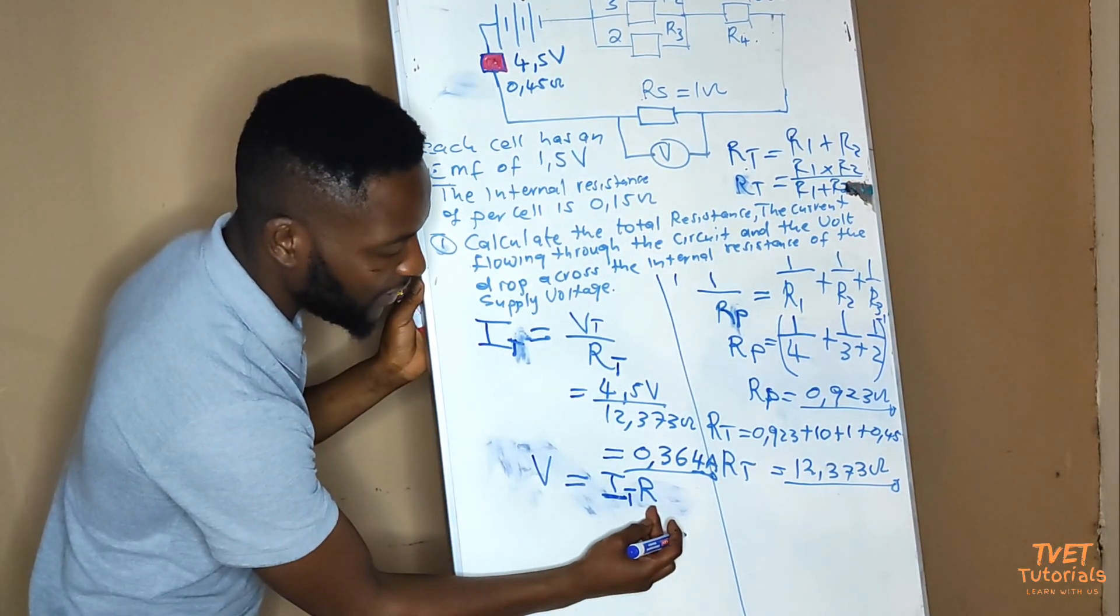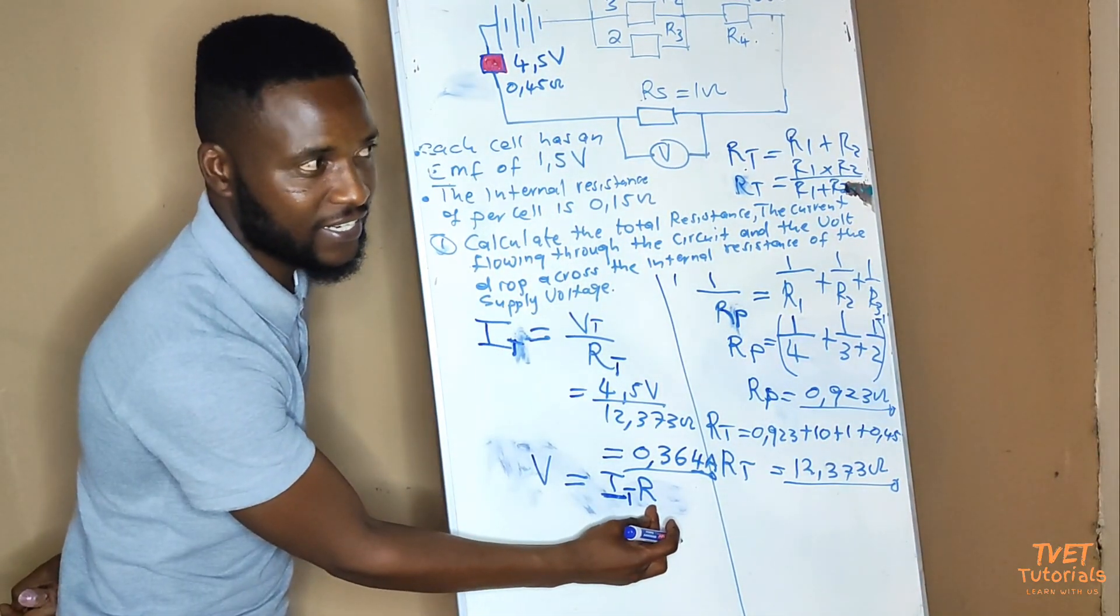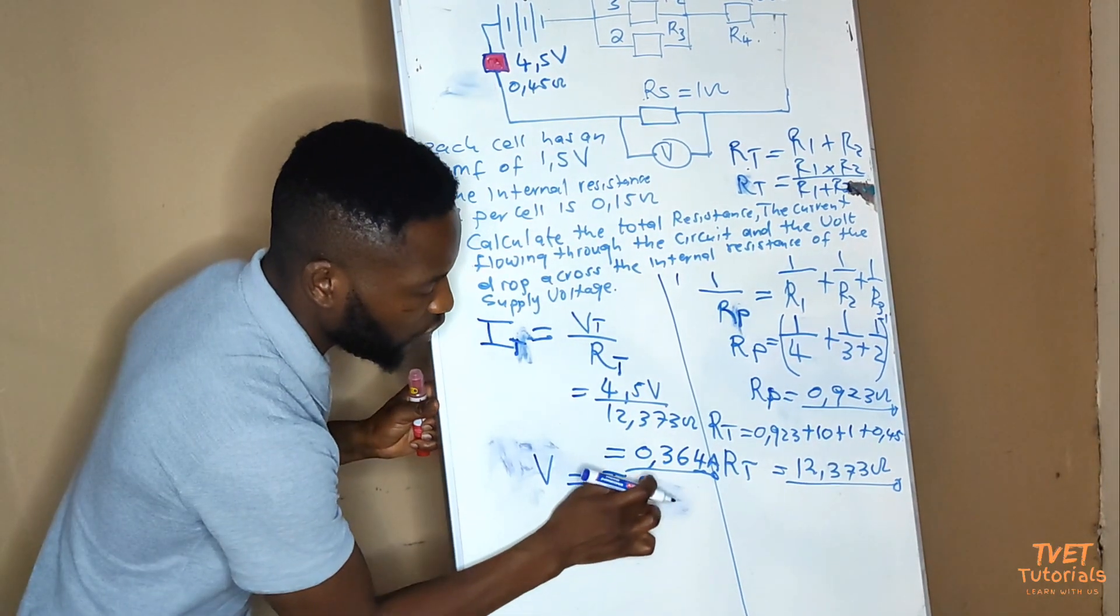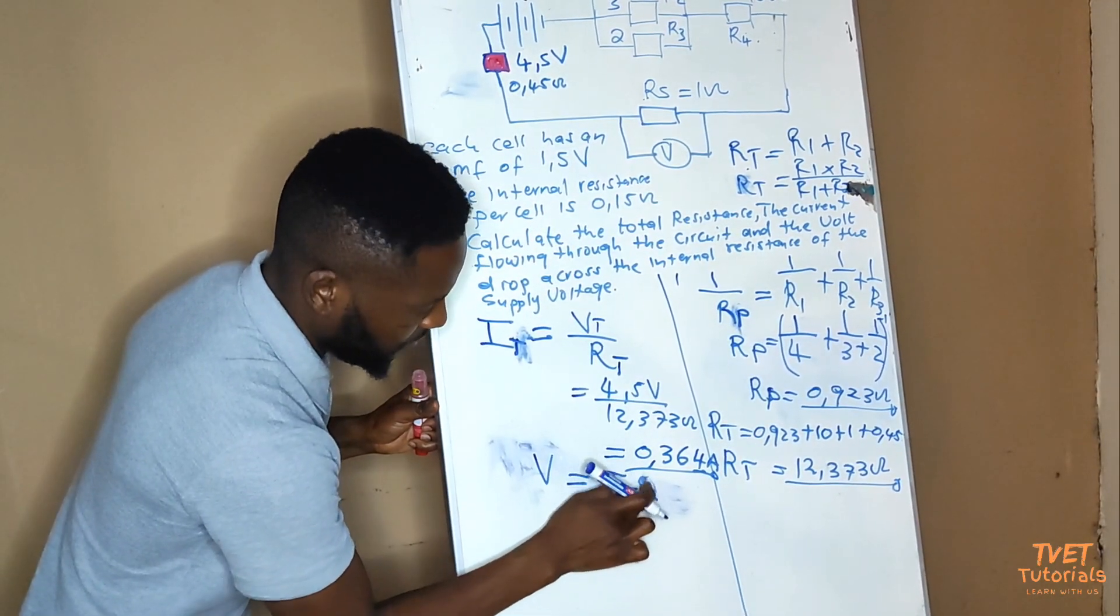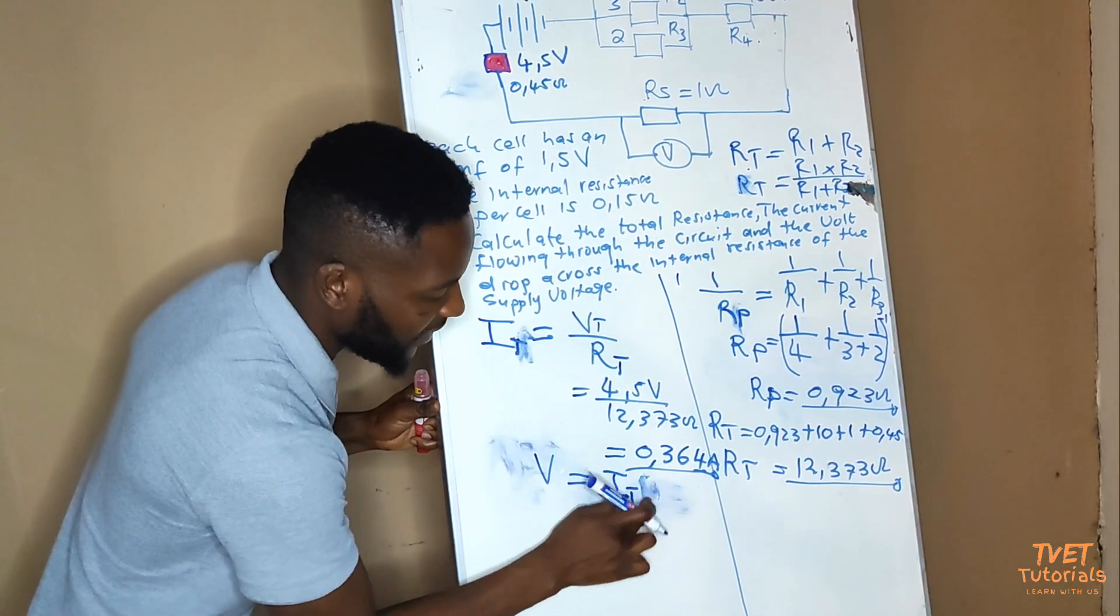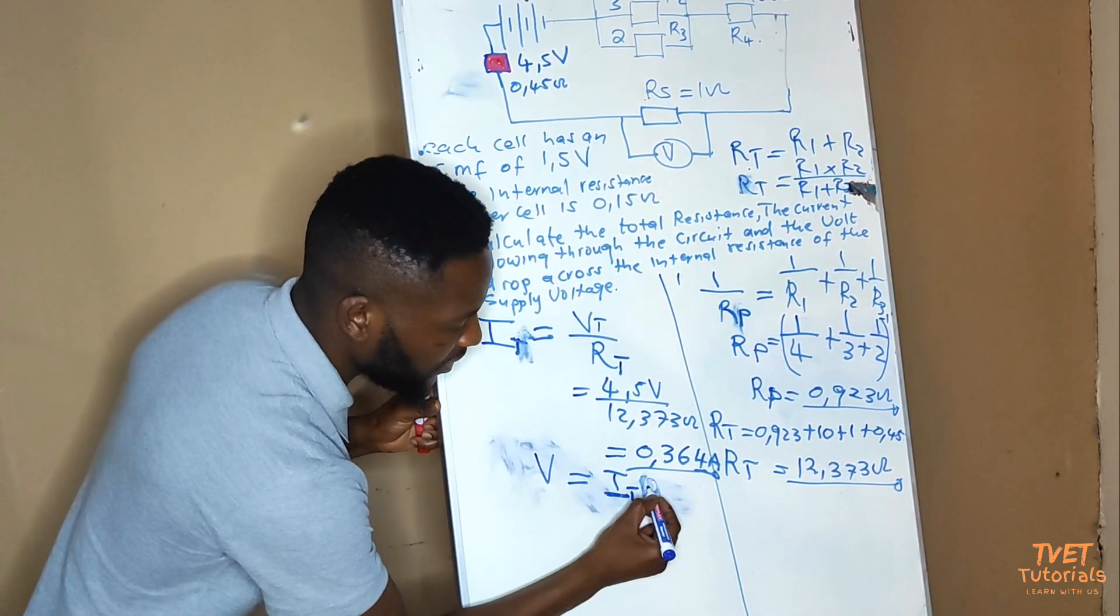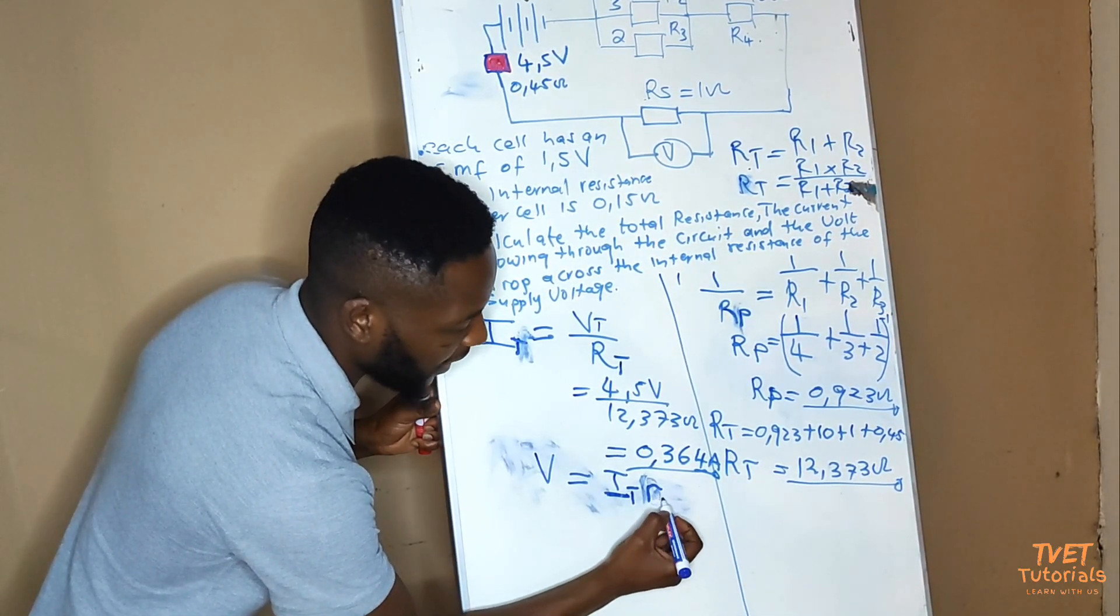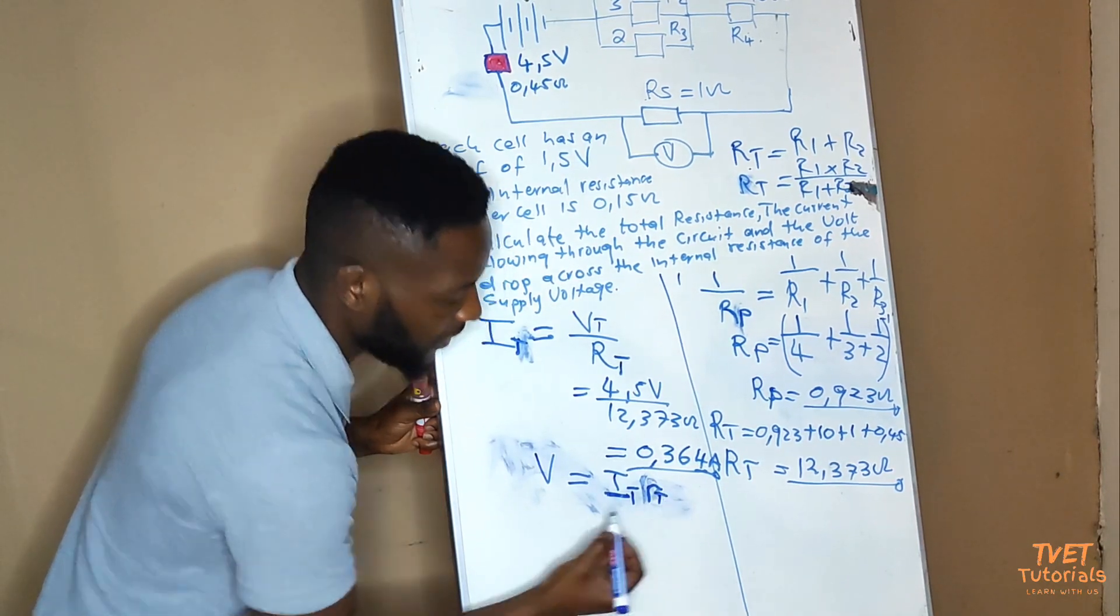multiplied by the value of the internal resistance. Usually, we represent the internal resistance using small letter r, so I'll write small letter r.